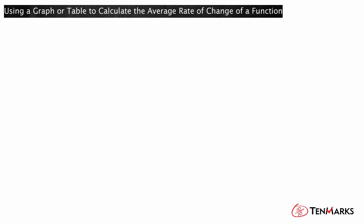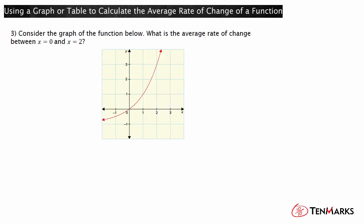The third problem is an example of an exponential function. Consider the graph of the function below. What is the average rate of change between x equals 0 and x equals 2? Here, the y value at x equals 0 is 0, and the y value at x equals 2 is 3. Using the formula, you can calculate the average rate of change. The average rate of change is 3 minus 0 divided by 2 minus 0. The result is 3 over 2.